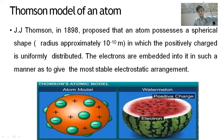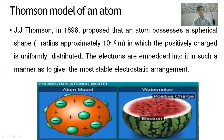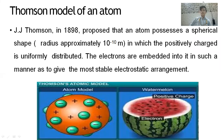J.J. Thomson proposed that an atom possesses a spherical shape with radius approximately 10 to the power minus 10 meters, in which the positive charge is uniformly distributed. The electrons are embedded in it in such a manner as to give the most stable electrostatic arrangement. He compared his model with a watermelon — the red pulp represents the positive charge, and the seeds uniformly embedded inside represent the electrons.